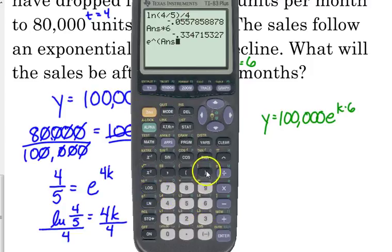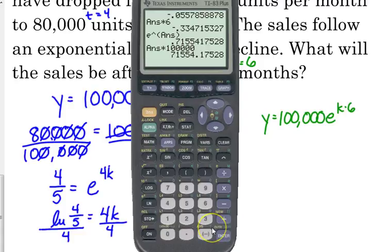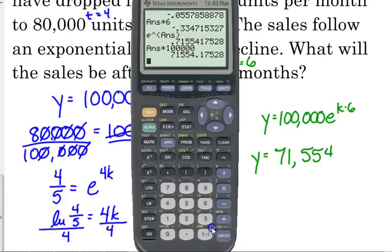So E raised to that number times 100,000. So, it declines to 71,554. And we're talking about units, so we'll just round it off to the nearest whole number.